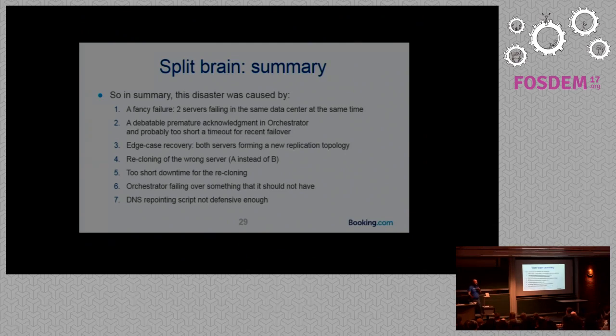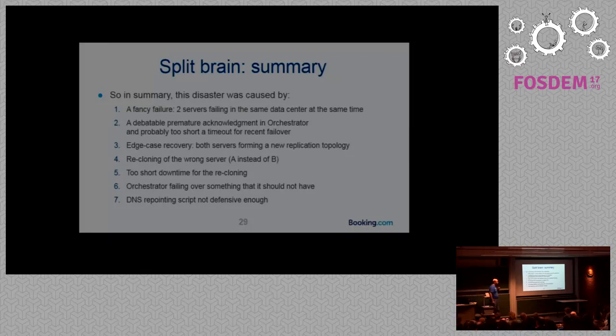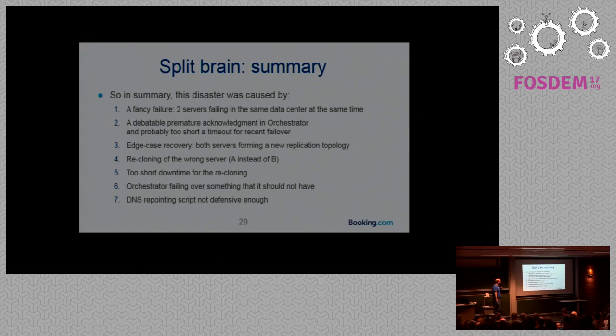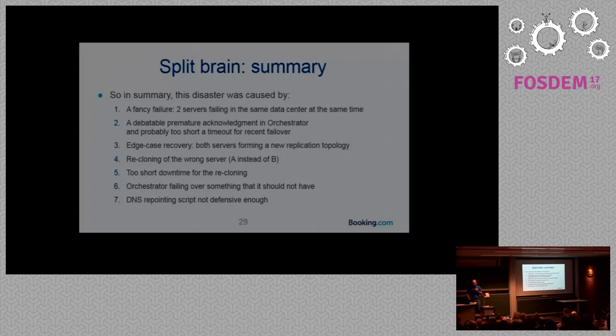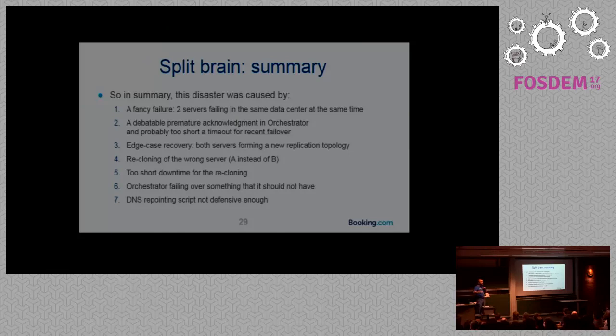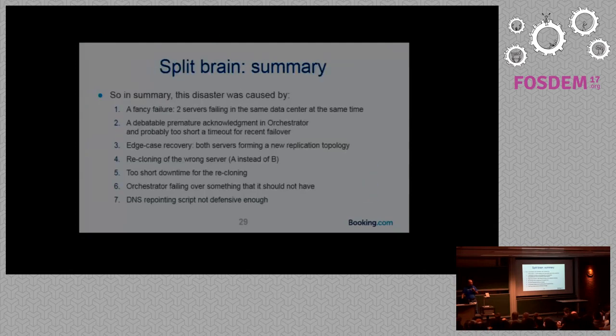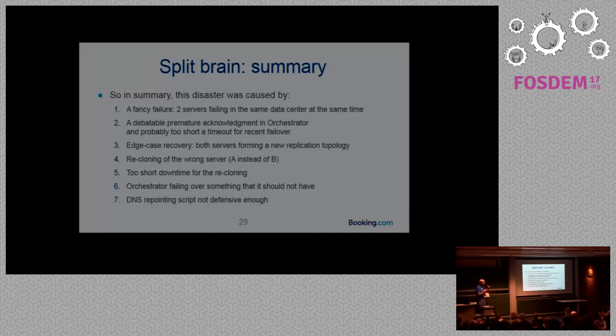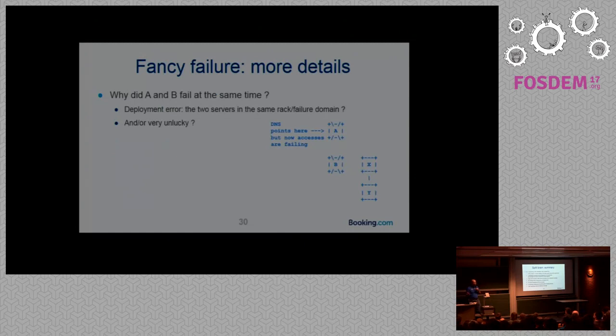Orchestrator has some mechanism to avoid flapping. And it will not failover a second time the same chain in a short amount of time. And I think this is also human error number zero, which is not mine. Orchestrator needs you to acknowledge a failover before another failover will happen. So if A and B are not recloned, is it good or bad to acknowledge? It was acknowledged in that case. So there are actually seven things that caused this problem. Two servers failing, human error number zero, an edge case recovery, me recloning the wrong server, me not downtiming that server enough, orchestrator probably failing over something that it shouldn't have, and the DNS script that stole the DNS entry from X.